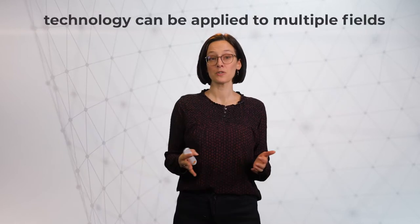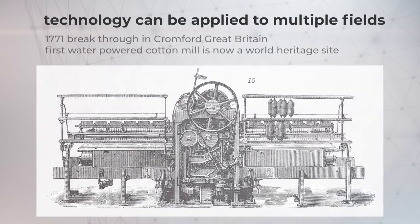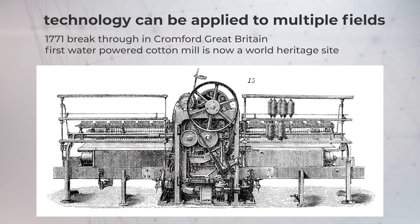The continuous manufacturing approach can be applied to multiple fields. For example, there was a technological breakthrough in 1771 in Cromford, Great Britain, where the first water-powered cotton mill was installed. This mill practically started the Industrial Revolution, because continuous manufacturing allowed producing a lot of product in a very fast and very efficient way.